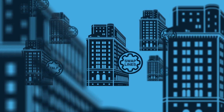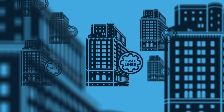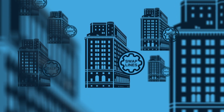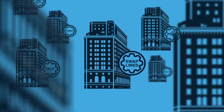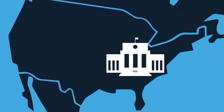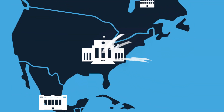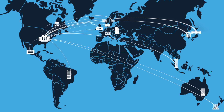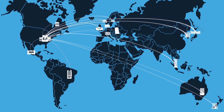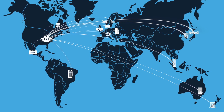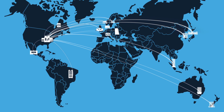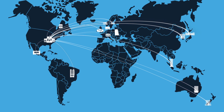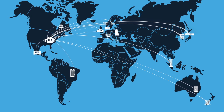Central bank liquidity swap lines are among several facilities established by the Federal Reserve to support the economy during the coronavirus pandemic. They were first used during the 2008 financial crisis, and were recently enhanced and expanded to a larger set of countries. But what are swap lines? How do they function? And why are these liquidity arrangements with foreign central banks important to households and businesses in the United States?